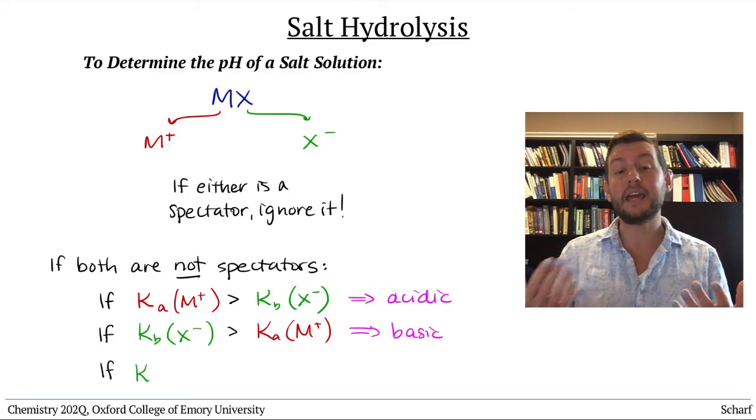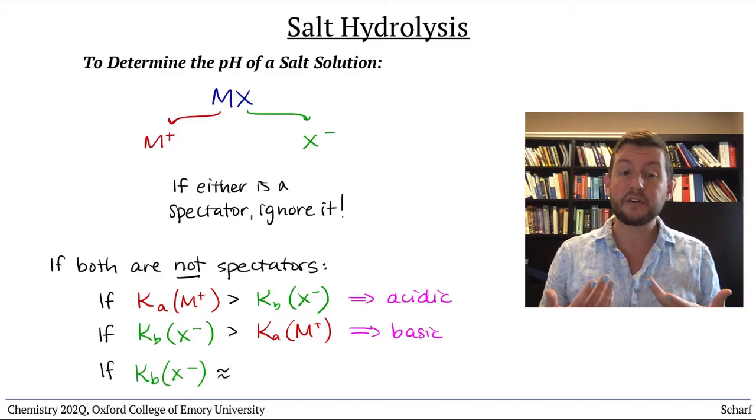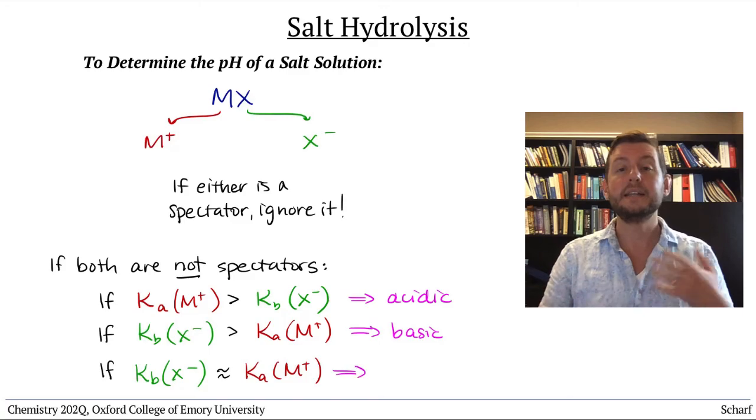If the Ka and Kb values are close to each other, then the solution is near neutral.